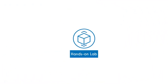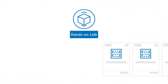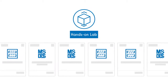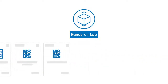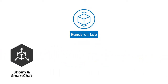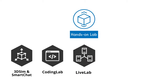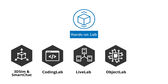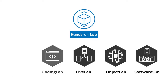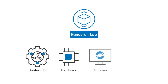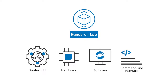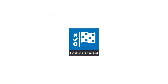UCertify comes complete with 56 hands-on labs to give students a real exam experience in an online environment. The lab consists of 3DSim and SmartChat, coding lab, live lab, object lab, and software sim that simulate real-world hardware, software, and command line interface environments that allow students to perform activities in real or simulated environments.